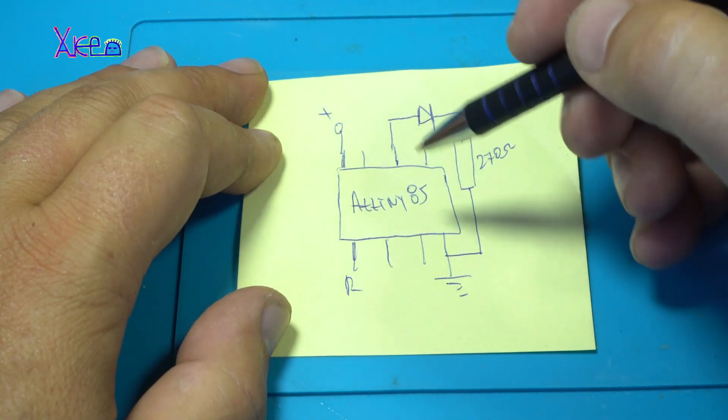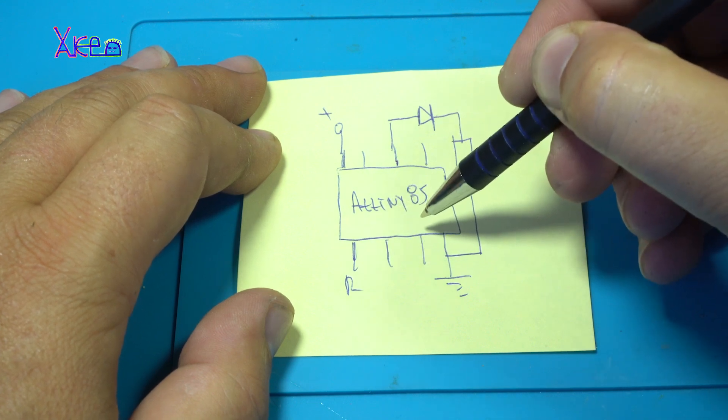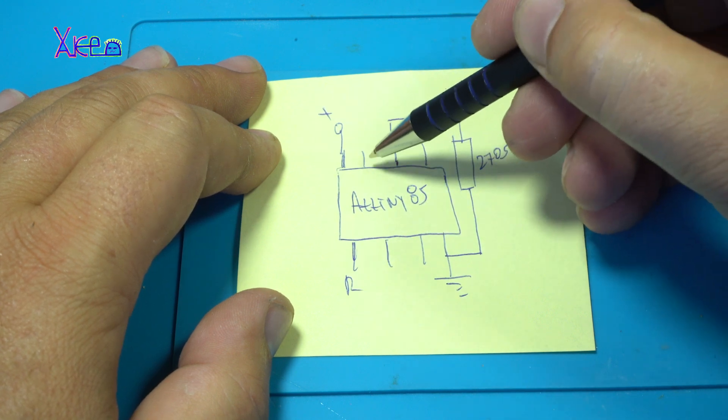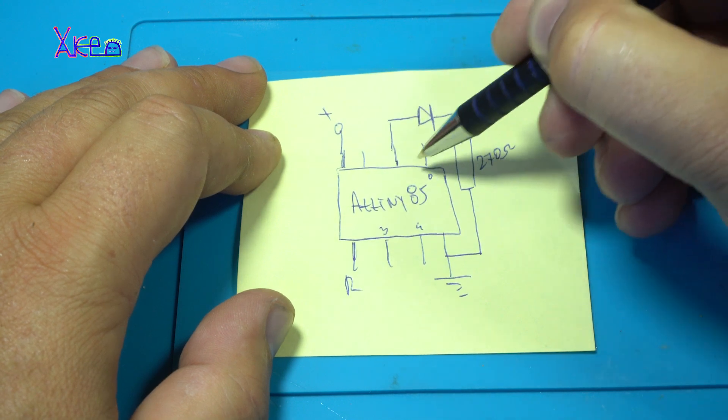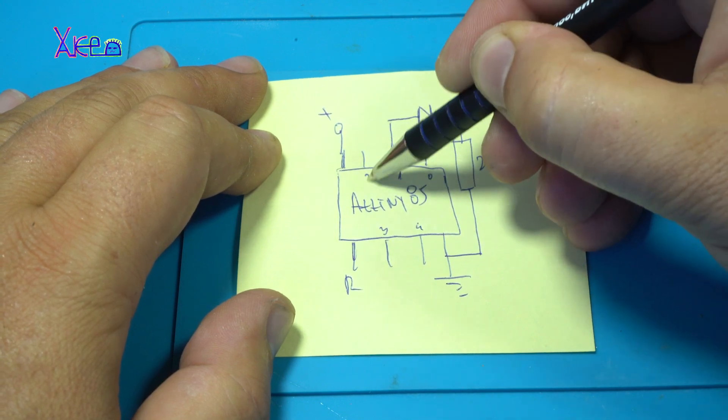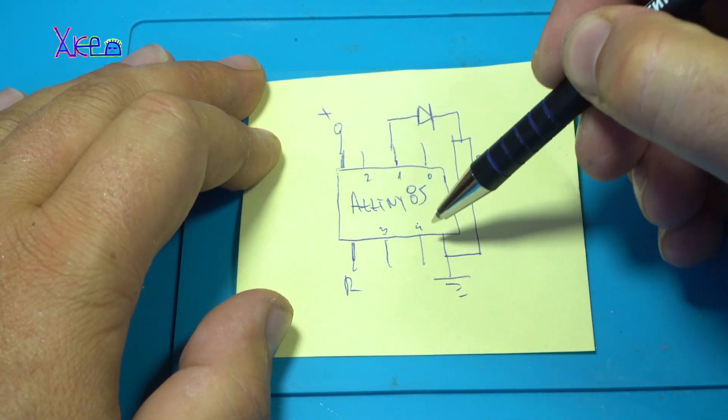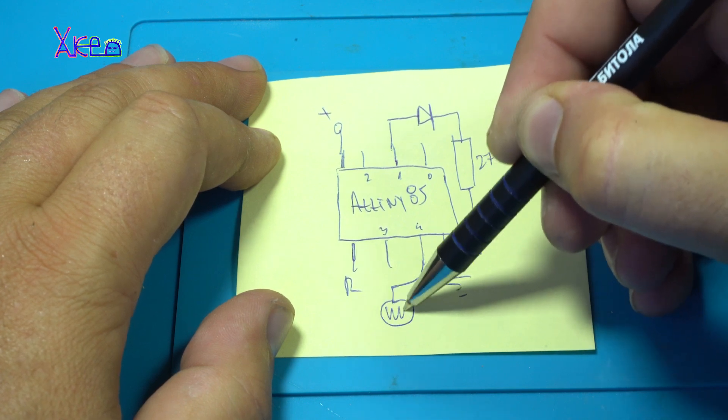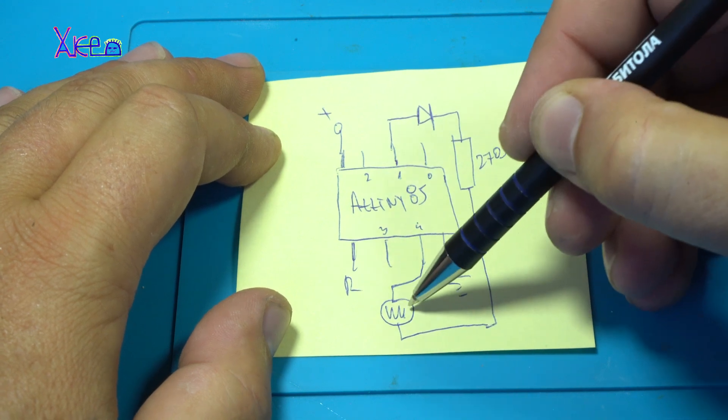And the photoresistor is connected on the 3rd pin of the ATtiny, or that is digital pin number 4. Zero, one, two, three, four. Yes. This is three, this is zero, one, two, with ground. This is the photoresistor.